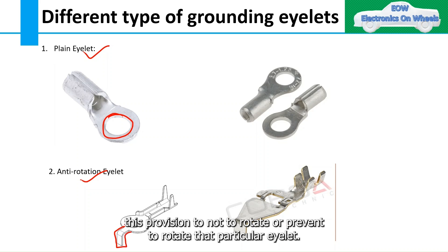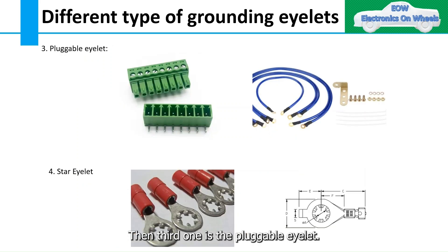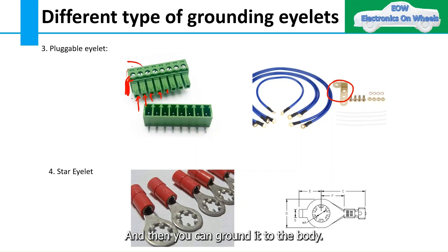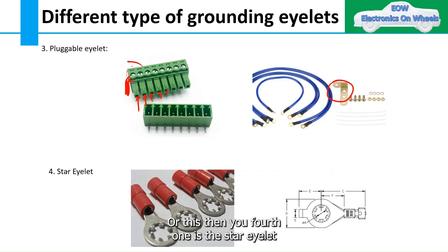The second type is the anti-rotation eyelet. In the anti-rotation eyelet you have a provision to prevent that particular eyelet from rotating. The third one is the pluggable eyelet, where multiple wires can be inserted and then grounded to the body or chassis.